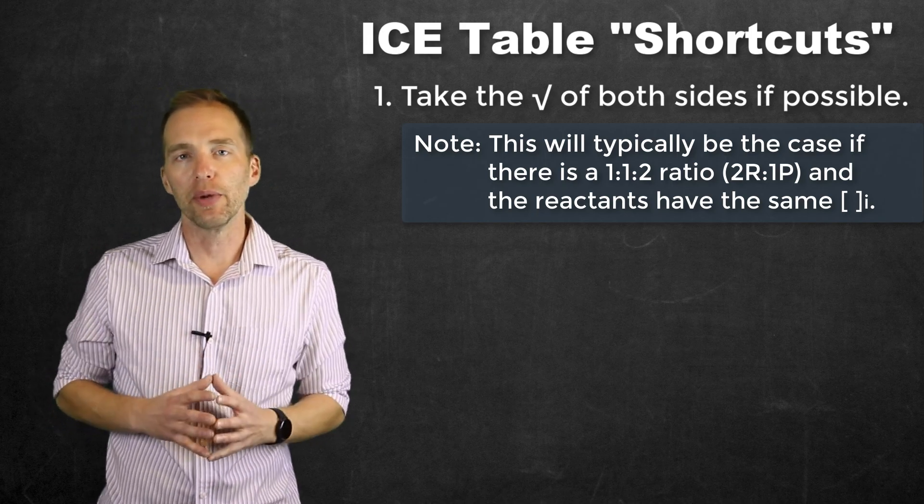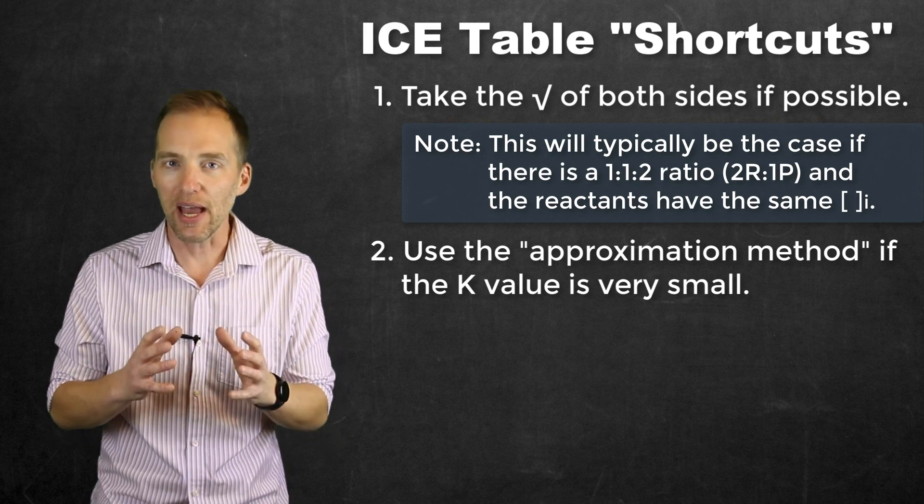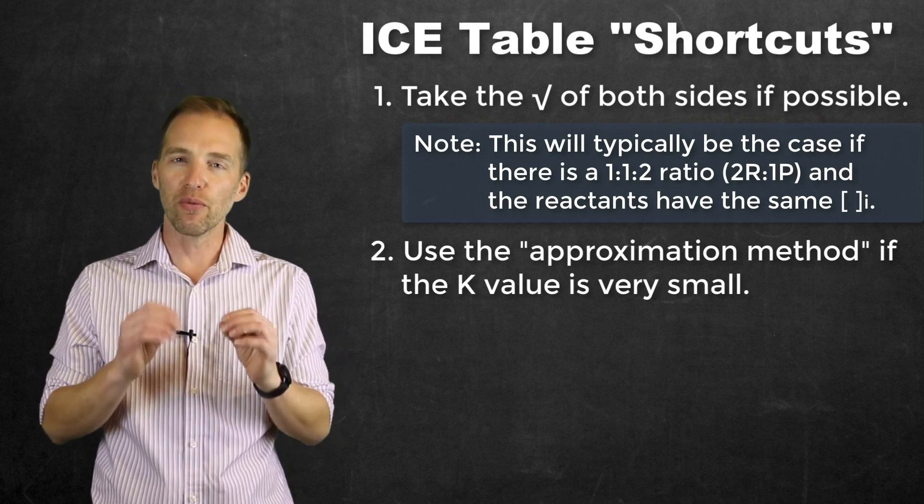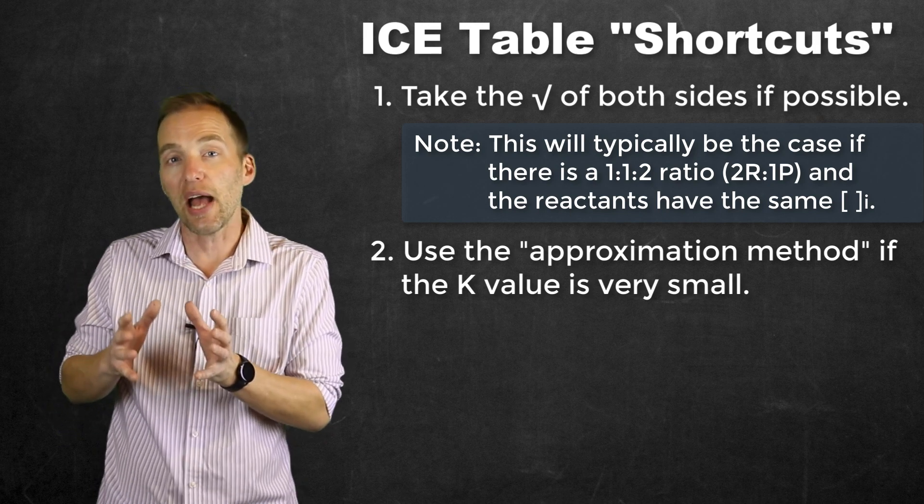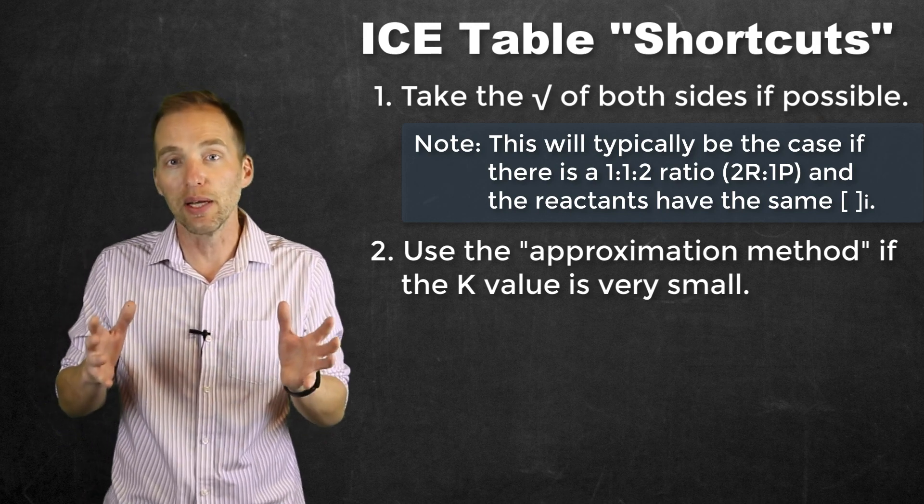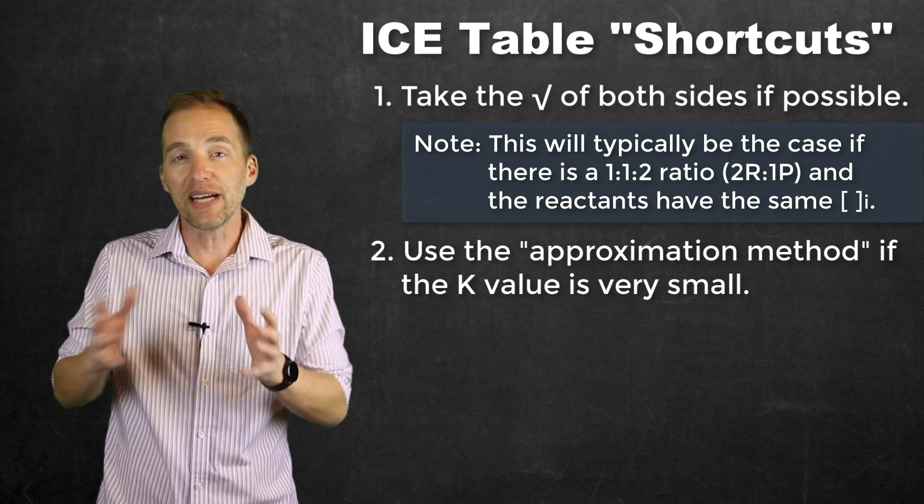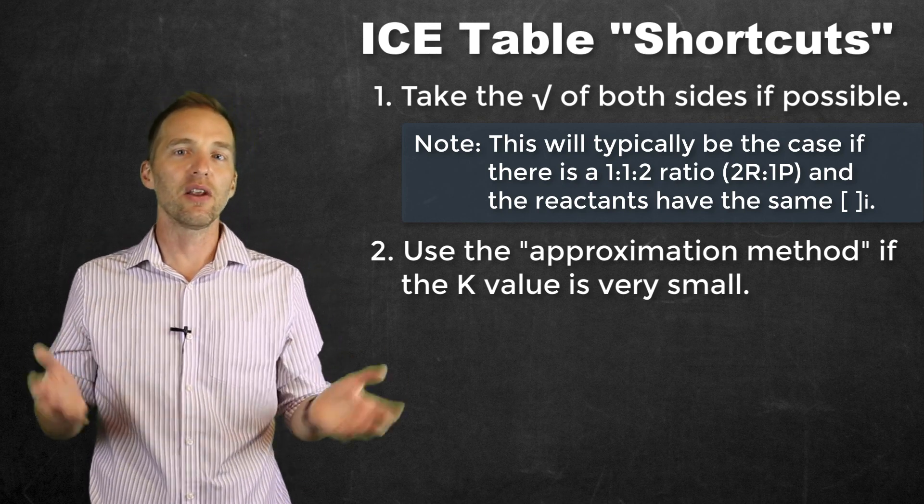The other scenario that we come across is if we have a really, really small K. Now, remember what K represents. If we have a really, really small K, most of the reaction stays as reactants in that equilibrium. So, what that tells us is the change in X actually isn't very large.